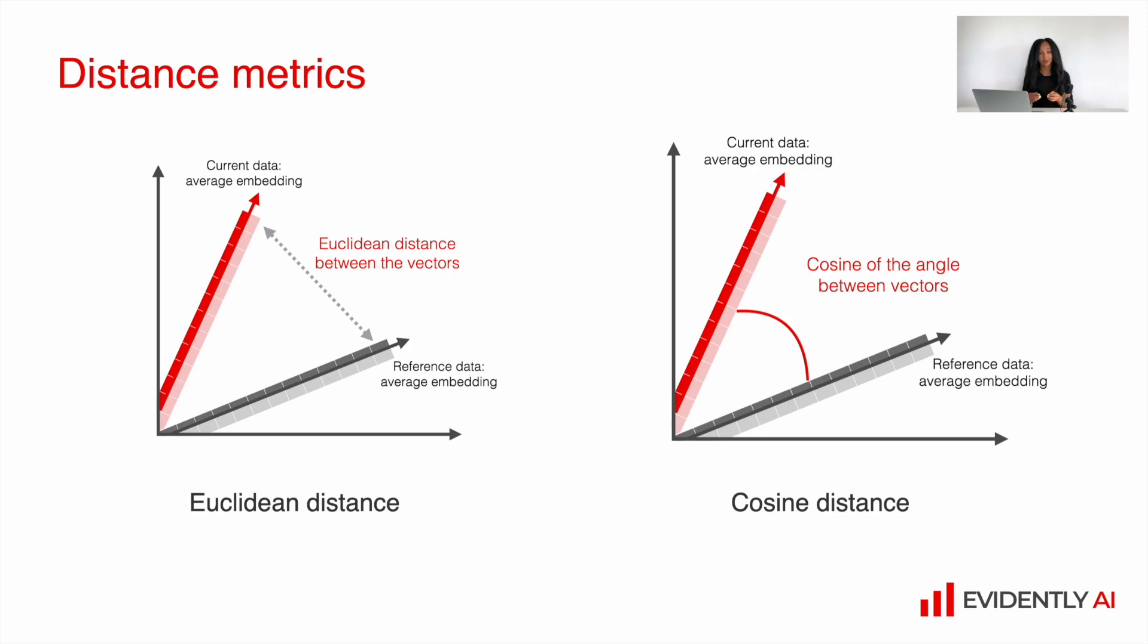How exactly? For example, we can find a centroid for our reference vectors, reference data and centroid for our current data and assess the distance between those two centroids. If you have a huge distance, then probably there are some shifts in those datasets. If the distance is pretty narrow, then probably there are no shifts and datasets are quite similar.